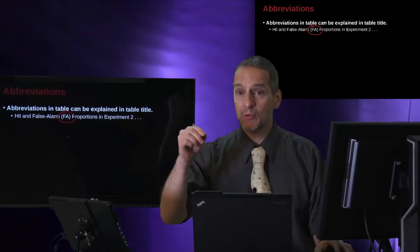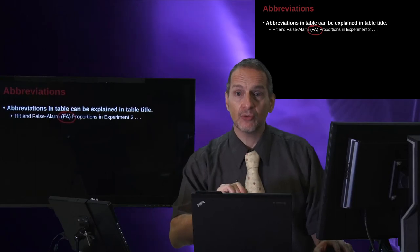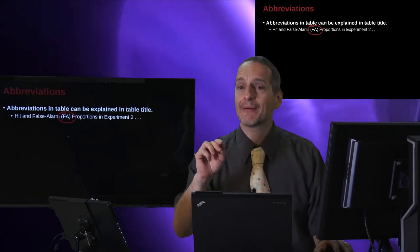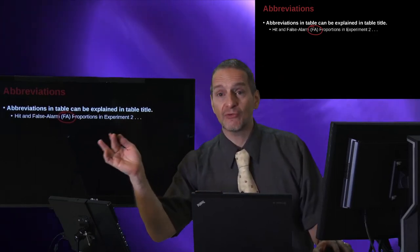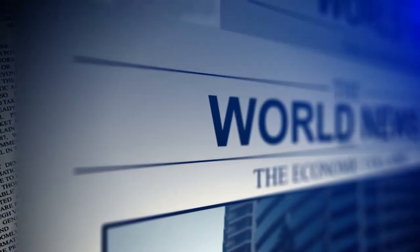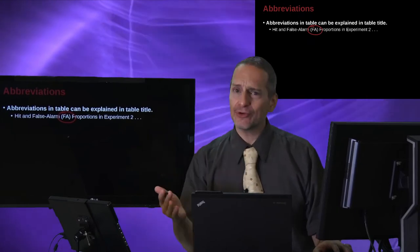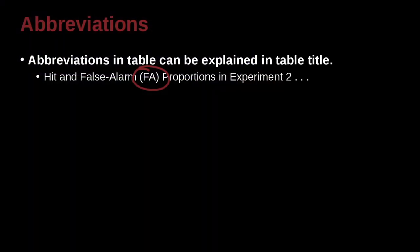Why would we not put this inside of a note at the bottom? That's perfectly acceptable. In fact, inside the table we could have FA and then put a little asterisk, and then down in the note we can say what does asterisk mean? That means FA, false alarm. Why don't we do that? Well we put it in there because we're saying this FA is really key to understanding this table. This table is about FA. If you go read the table, you don't know what FA is, that's really confusing. So you can go ahead and explain the abbreviation inside the title.